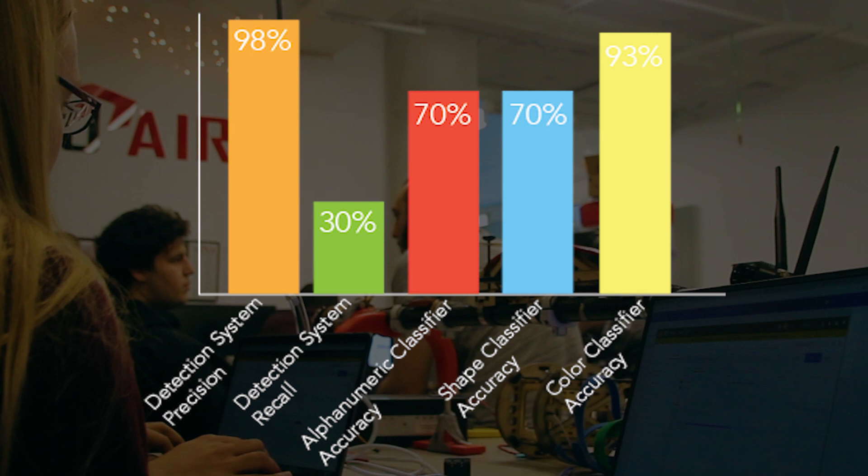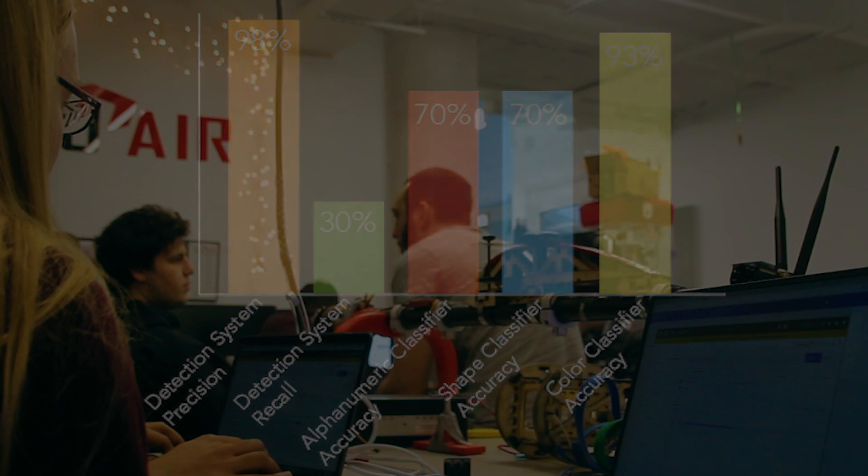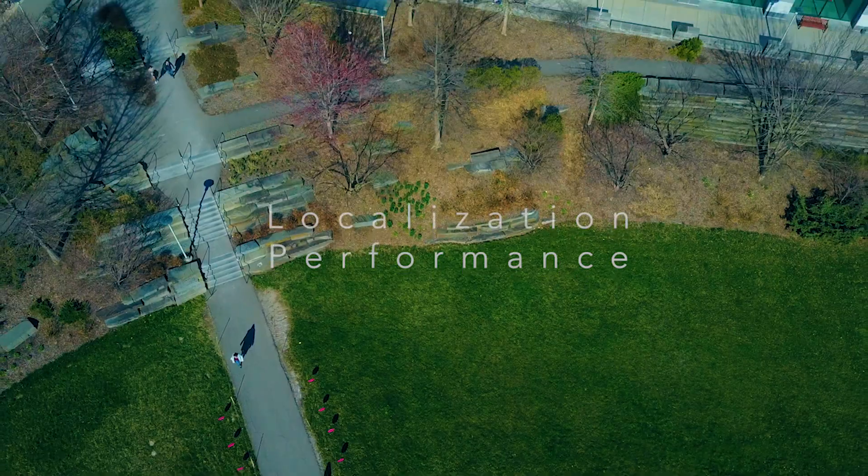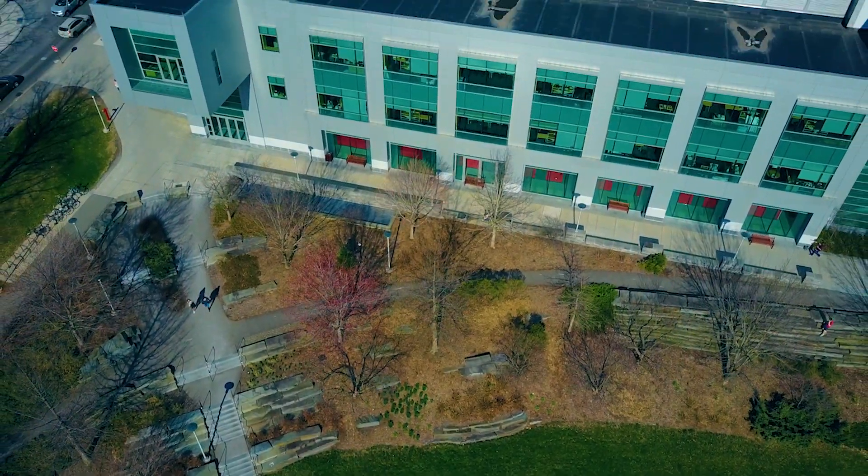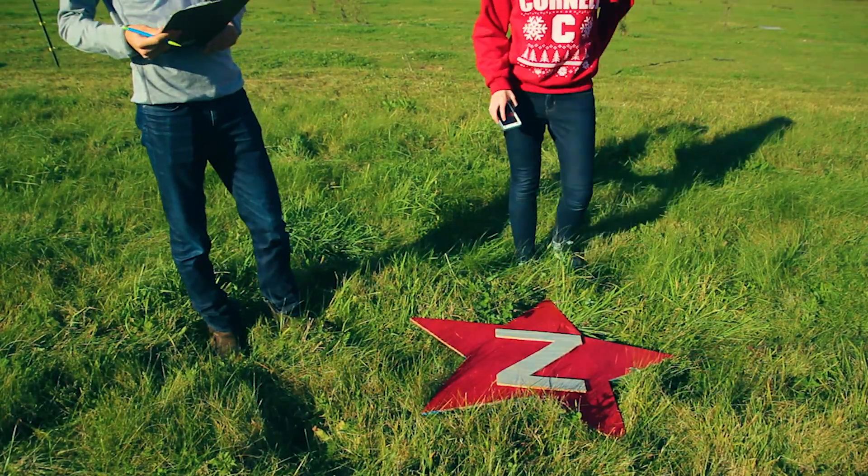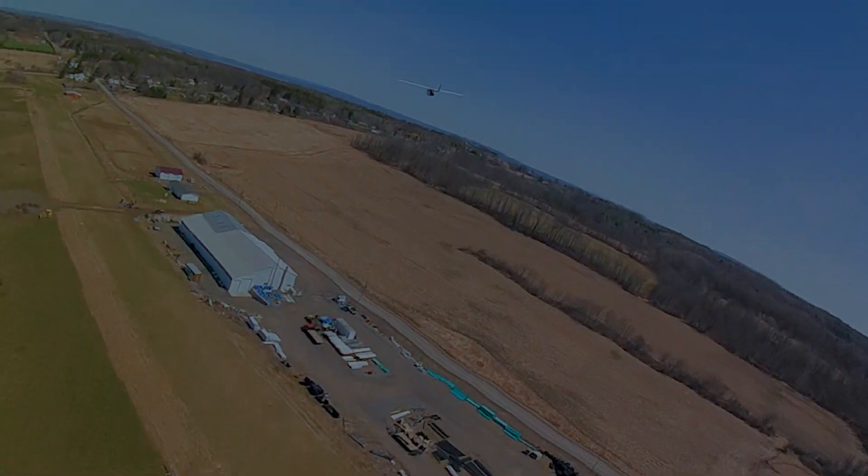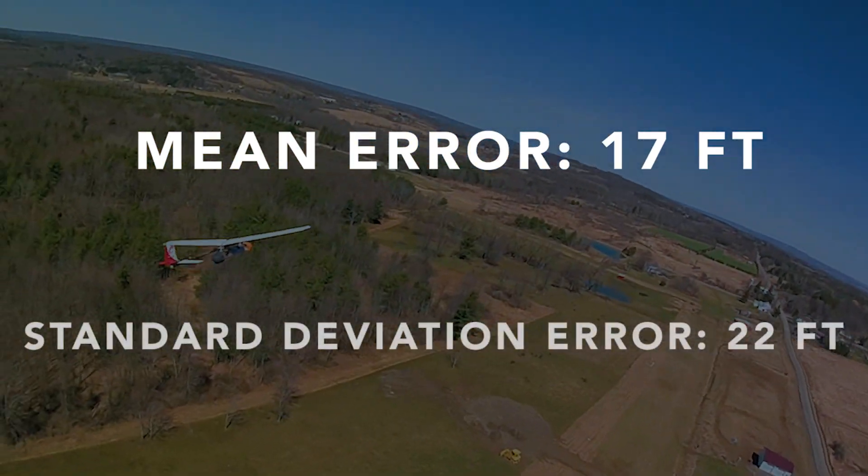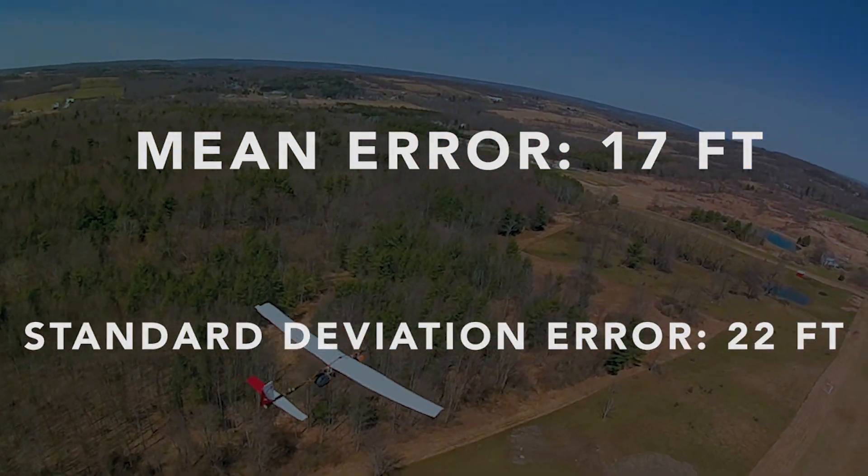We have tested our localization system on 90 hand-tagged objects from over 15 test flights. A phone GPS was used to determine the object's true location. Latitude and longitude values from our geotag algorithm had a mean error of 17 feet from the target's true location and a standard deviation error of 22 feet.